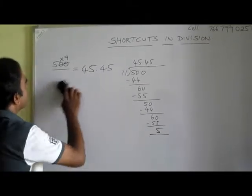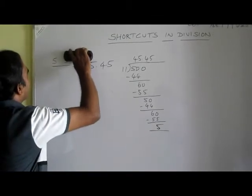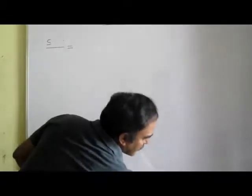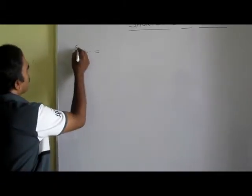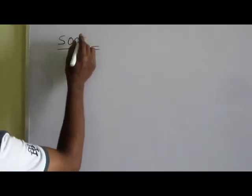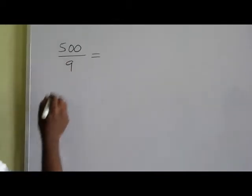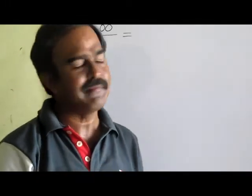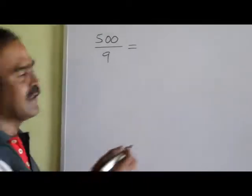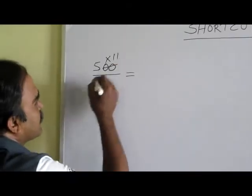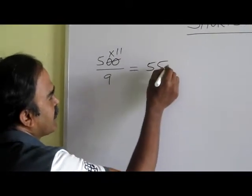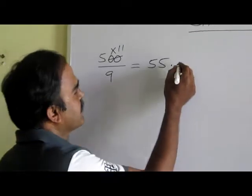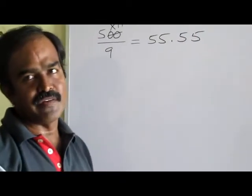Let us take the same example and divide by 9. What is 500 by 9? Earlier, instead of dividing by 11 we multiplied by 9. Now, instead of dividing by 9, we can multiply by 11. What is 5 times 11? 55. Put a decimal point and write those two digits after the decimal point. So my answer is 55.55.